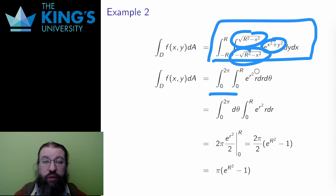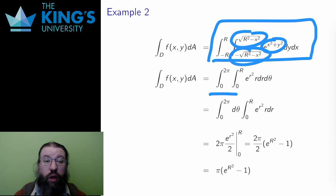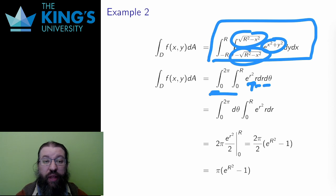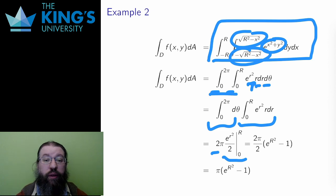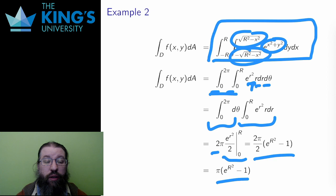Polar coordinates make this integral much easier to calculate. I do the integration, remembering the Jacobian term r, and making sure that the order of the bounds and the dr d theta match inside and outside. This function is actually separable, so I can do two integrals entirely on their own. The first just evaluates to 2 pi, and the second has an antiderivative of e to the r squared over 2, which I evaluate on the bounds, and the result at the end is pi times e to the capital R squared minus 1.